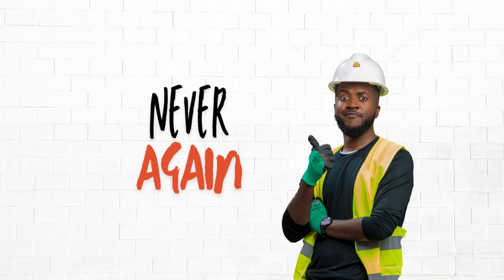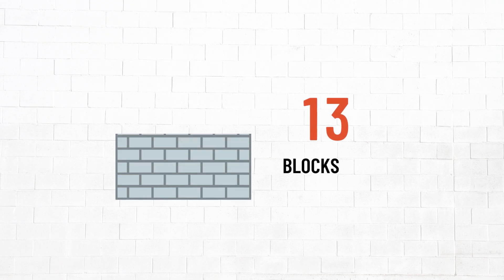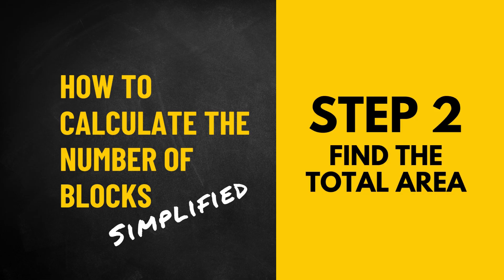Now that we have this magic number, we never need to do this calculation again, because now we all know that it always takes 13 blocks to cover 1 square meter. So on to step 2.